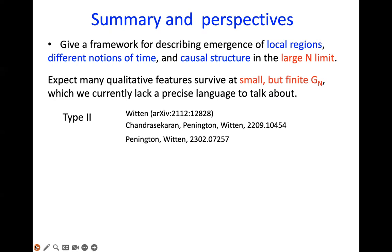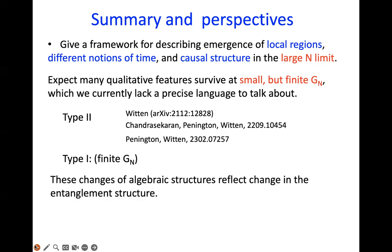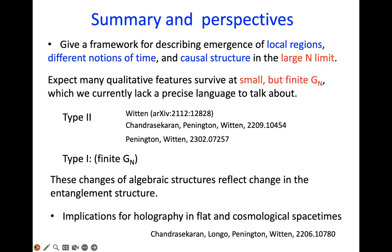There is recent work describing that when you include perturbative G-Newton corrections, the algebra can become Type II. At finite G-Newton we should see Type I, and understanding how to incorporate the physics that changes the algebraic structure from Type III to Type II to Type I reflects the entanglement structures responsible for those spacetime structures. We also hope this framework can be used to understand flat space or de Sitter spacetime, where there has been some related work.